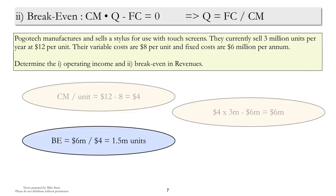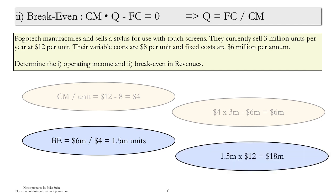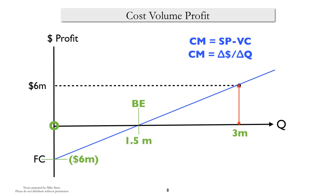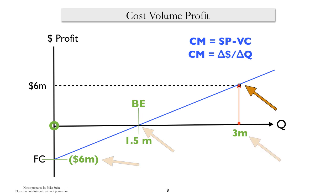Turning to breakeven, once again we substitute in the values: fixed cost of $6 million divided by the $4 per unit contribution margin equals 1.5 million units for breakeven. To get to revenues, we multiply the 1.5 million units times the sales price of $12, and we end up with $18 million. We can see this on the graph as well. We start off at zero level of sales, and at that point profit is minus the fixed cost, or a $6 million loss. When we get to 1.5 million in sales, we've reached the breakeven point. When sales of 3 million units are achieved, profits reach $6 million.